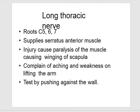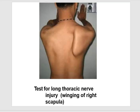Long thoracic nerve injury involves roots C5, C6, and C7, supplying the serratus anterior muscle. Injury causes paralysis of this muscle, causing winging of the scapula. The patient complains of ache and weakness on lifting the arm, and the test is performed by pushing against the wall to demonstrate winging of the right scapula.